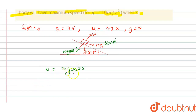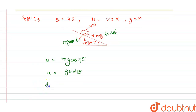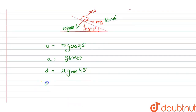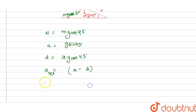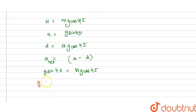From the diagram, the normal force N = mg cos 45°. The net acceleration a = g sin 45° − μg cos 45°. Maximum speed will be reached when acceleration equals zero, i.e., when g sin 45° = μg cos 45°.